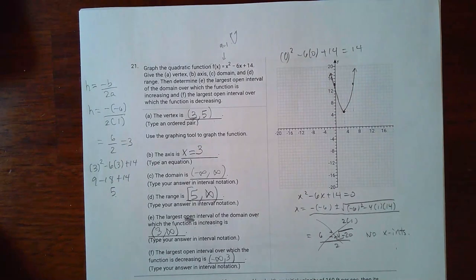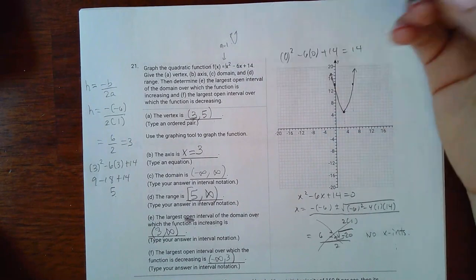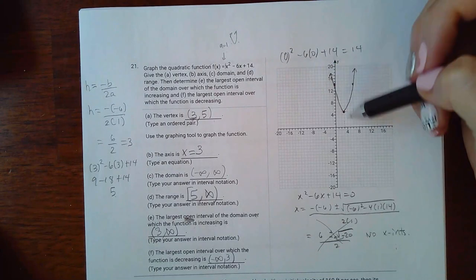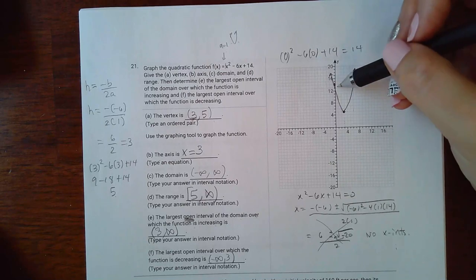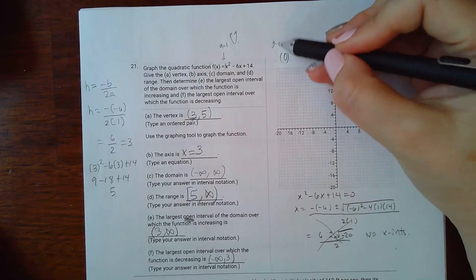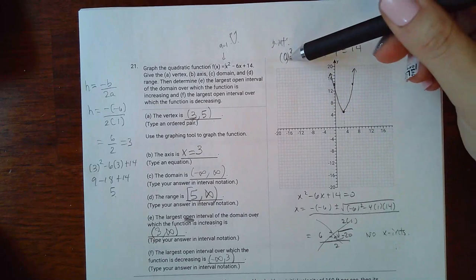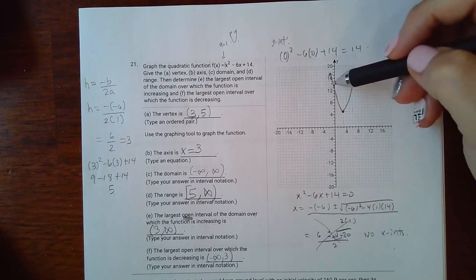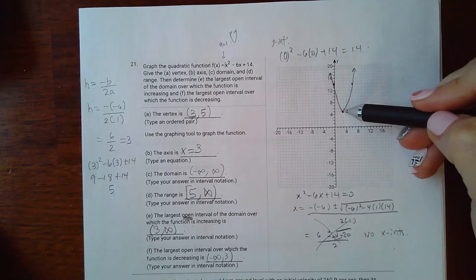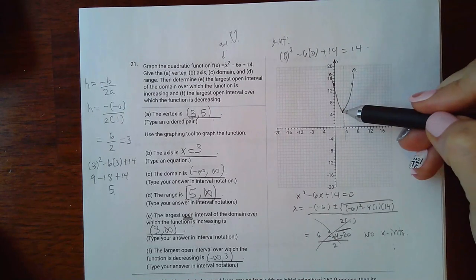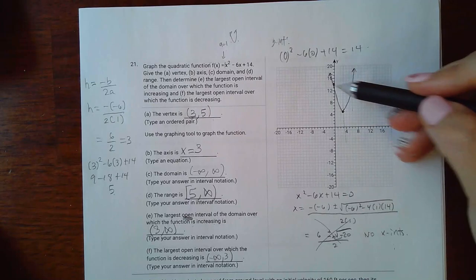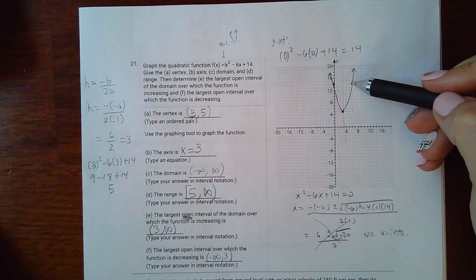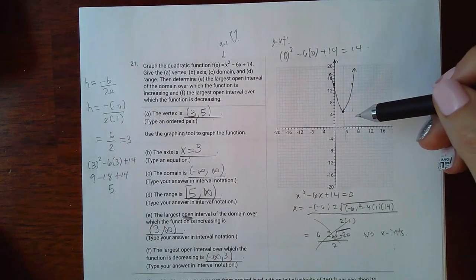Then I knew that a was a positive 1 because there's a hidden 1 right there, so that means it is going to open upward, which meant it was going to go in this manner. So in order for me to figure out the y-intercept, that was when I plugged in 0 for all the x's and I figured out that the y-intercept was 14. So using the symmetry of a parabola, since I went left 3 and up to 14, I went to the right 3 and then up 14, so that I could get the symmetrical placement there.